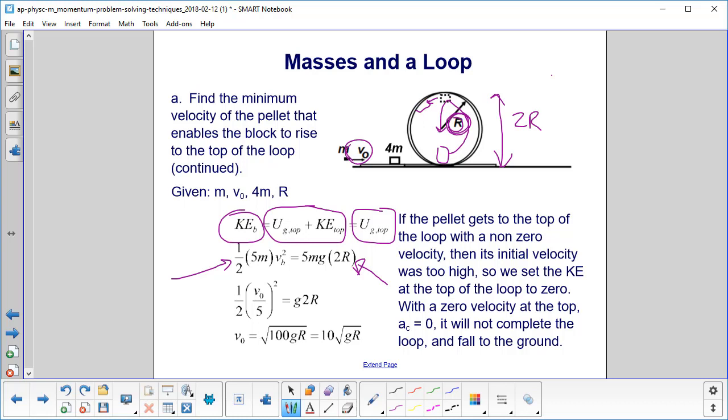What else do we know? Because we're not allowed to express our answer in terms of vb. Well, we know that vb is v0 over 5. We make that substitution. We put everybody in. And we find that our v0 is 10 times the square root of gr.